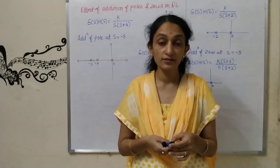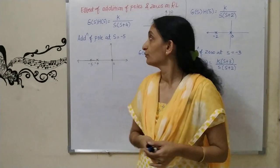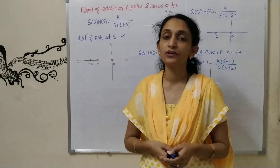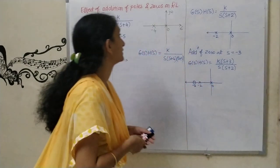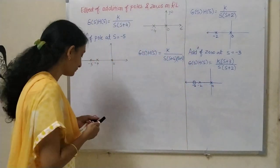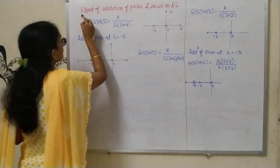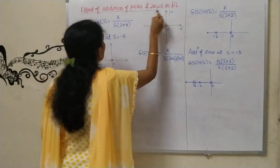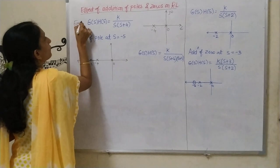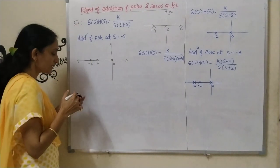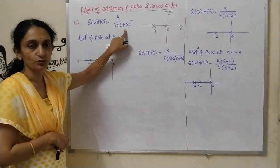Hello students. This is the last topic of this unit. We will see the effect of addition of poles and zeros on stability, or on root locus. I have taken one example with G(s)H(s) = K / (s(s+2)).